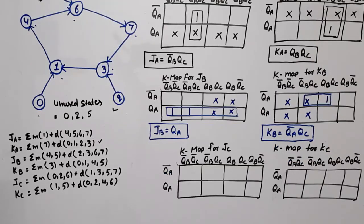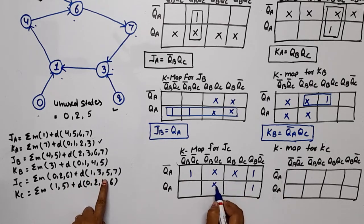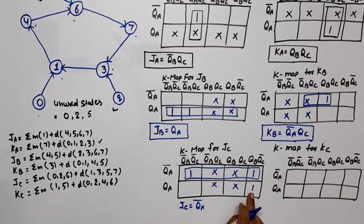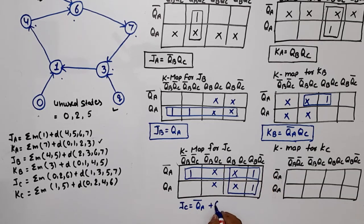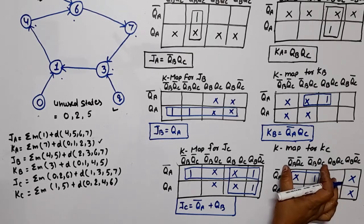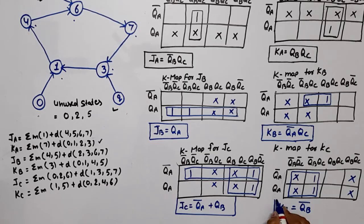For JC K-map, minterms at 0, 2, and 6, don't cares at 1, 3, 5, and 7. One quad covers some minterms giving QA-bar. One more quad is needed for the remaining minterm, giving QB from the column. So JC equals QA-bar + QB. For KC K-map, minterms at 1 and 5, don't cares at 0, 2, 4, and 6. One quad is possible, giving KC equals QB-bar.